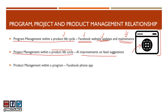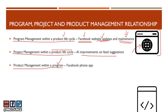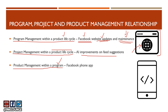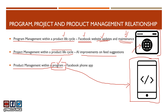The third relationship is where it gets tricky: product management within a program. Your program could be ensuring users access Facebook. Introducing the Facebook phone app is how you are doing product management within your program of making sure more and more users get access to Facebook. The Facebook phone app is a different product altogether, but it is part of a program whose charter says we want more users to have access to Facebook. This program can also include the Facebook website — this is product management within a program.